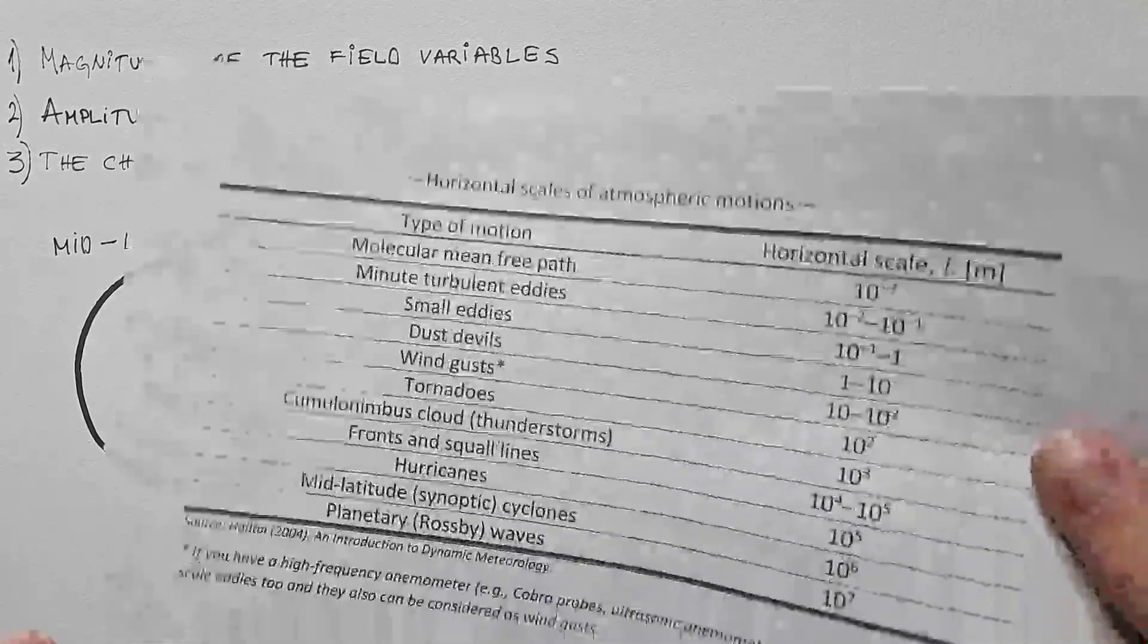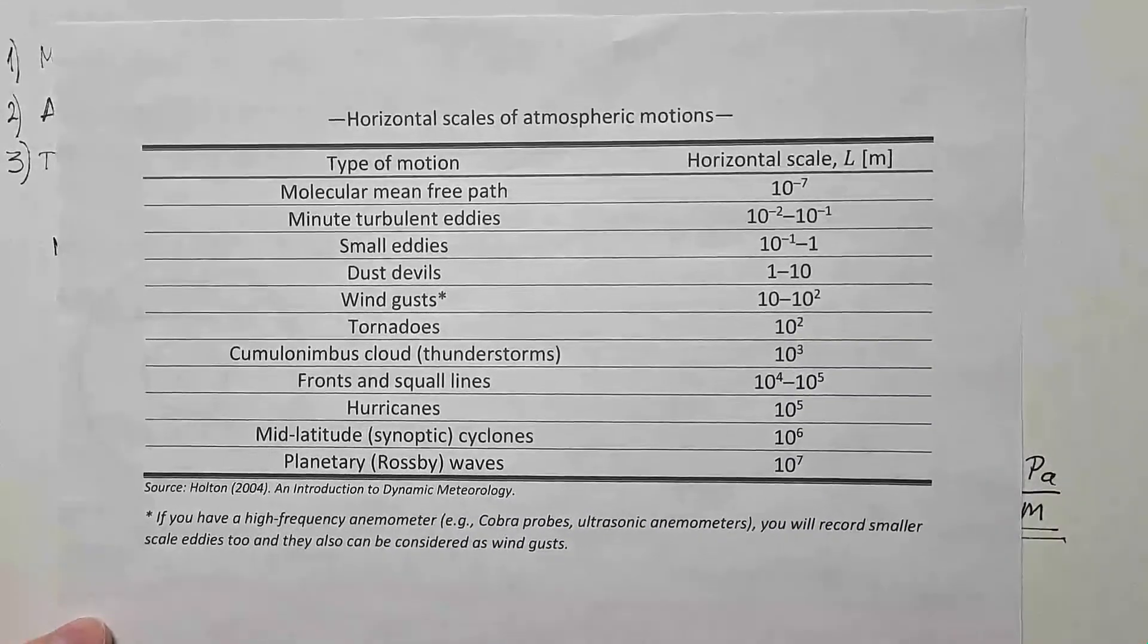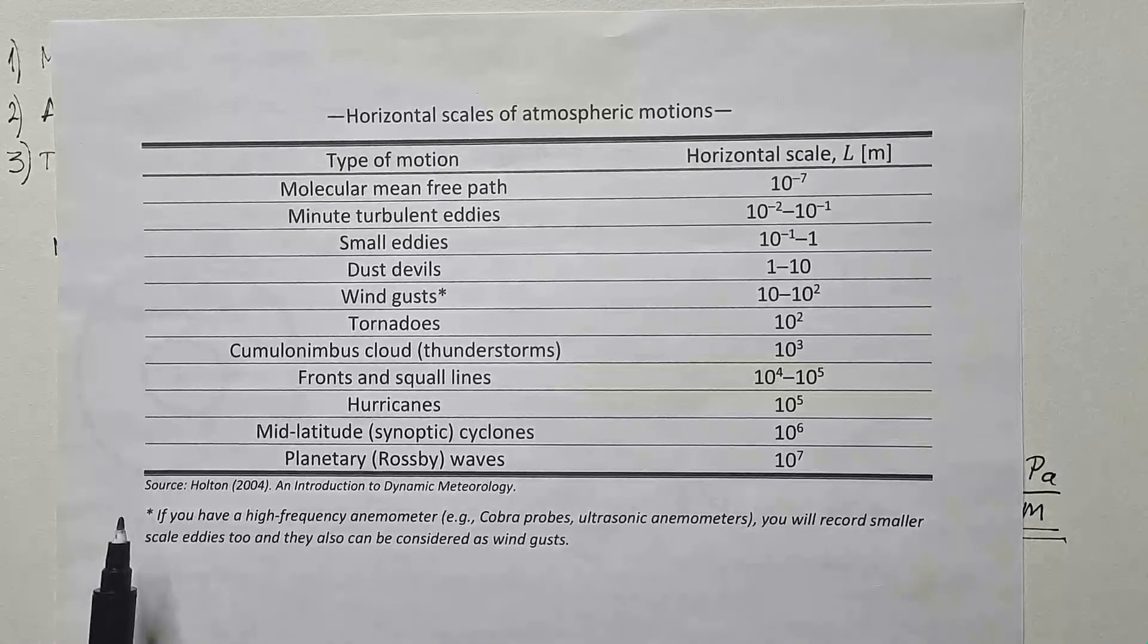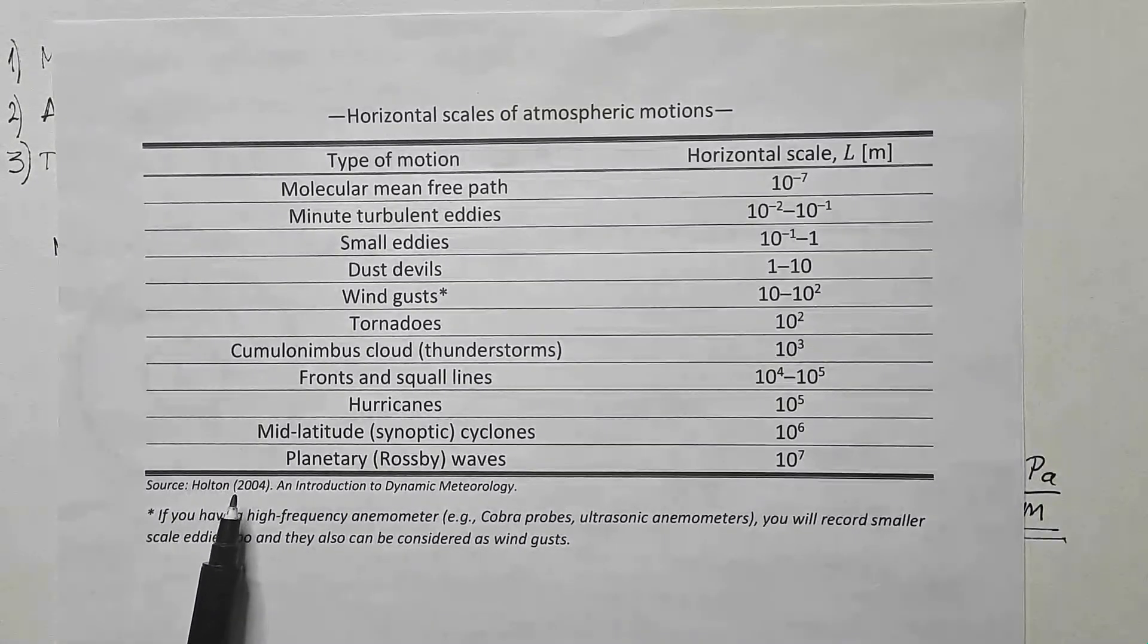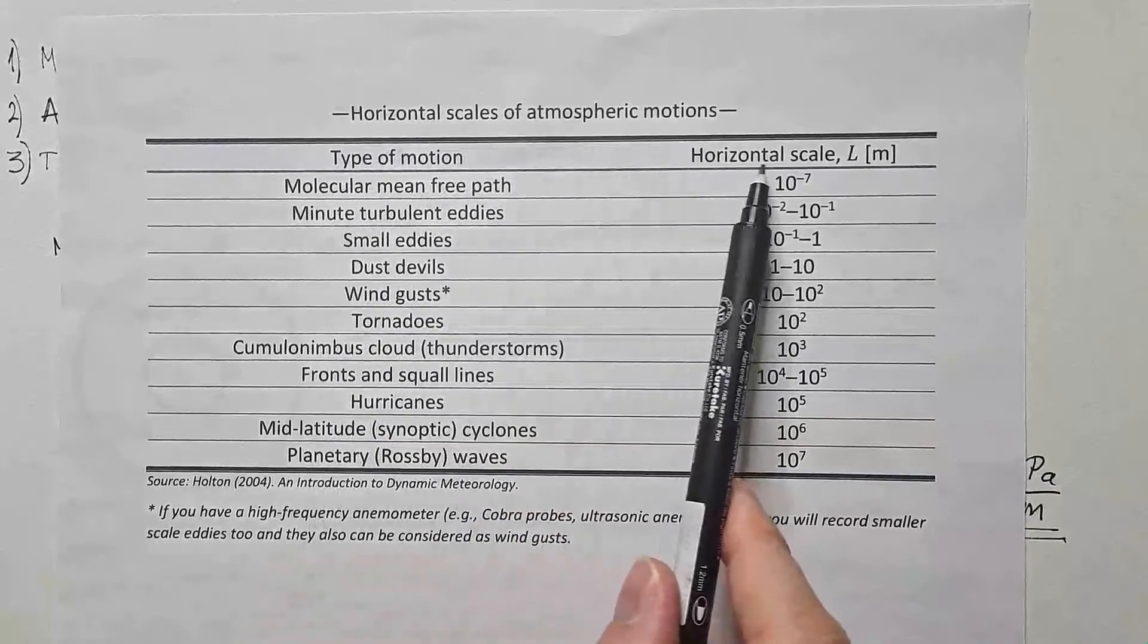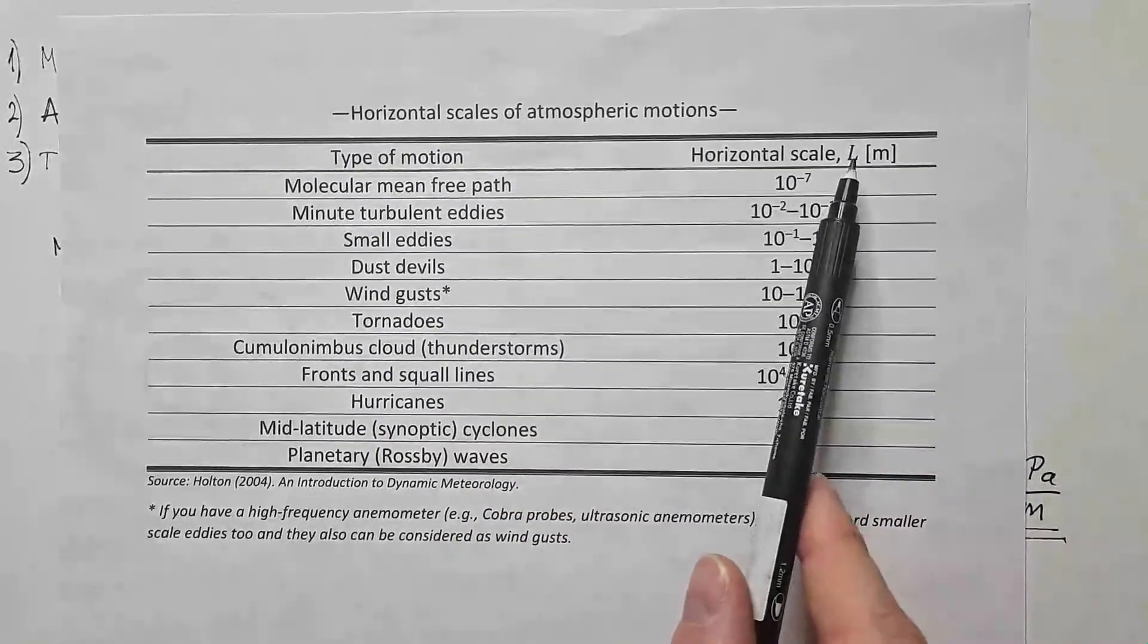And here I made a nice table, as I often do, where my main source is Holton's excellent book, an introduction to dynamic meteorology. And here we have horizontal scales of atmospheric motions. So we have different types of motions and associated horizontal scales.